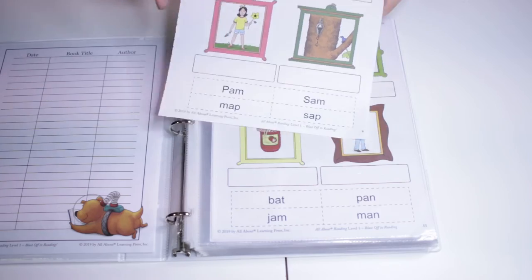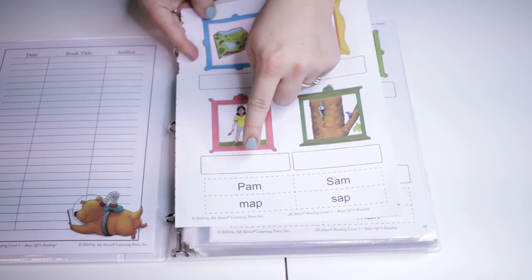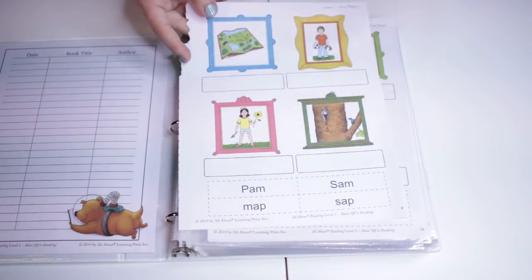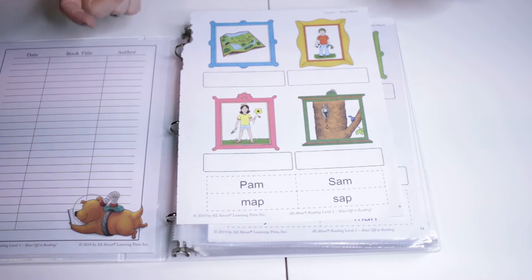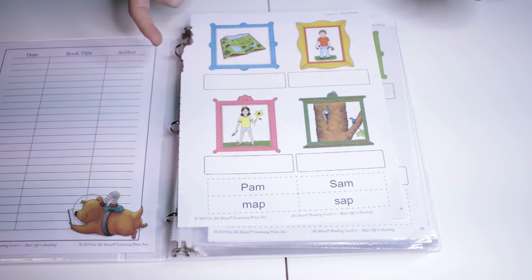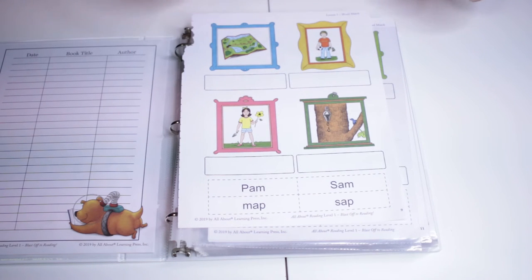So on day one they're only doing this one little worksheet. You would cut out these down here and have them find the picture it should match.